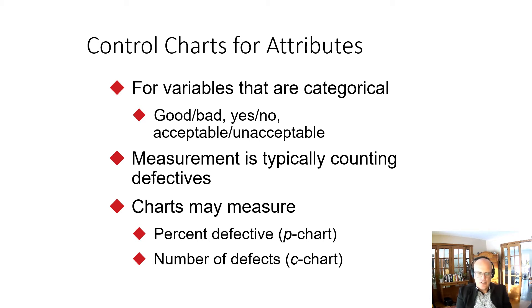So attributes are different from variables because they are categorical. They are binary: good, bad, yes, no, pass, fail, acceptable, unacceptable.